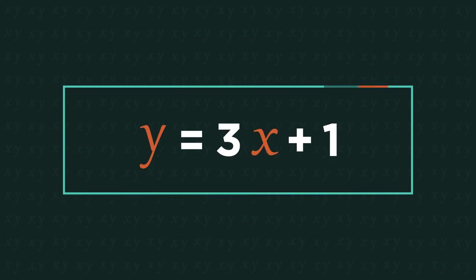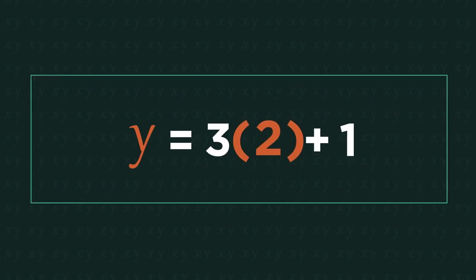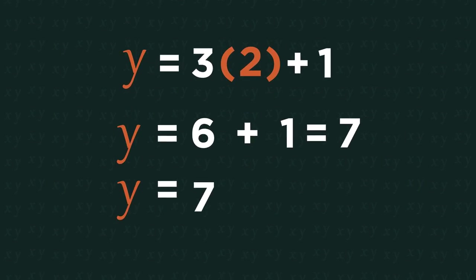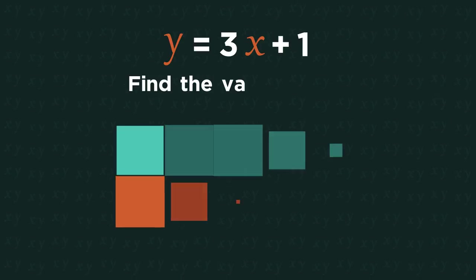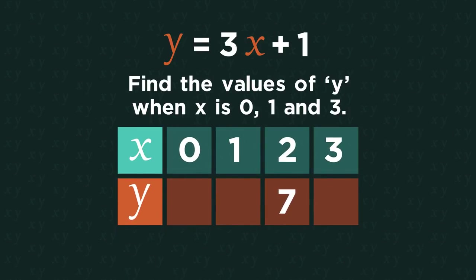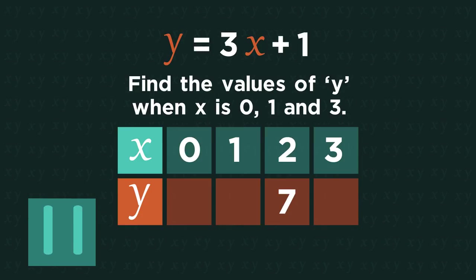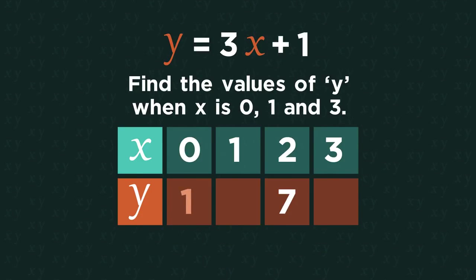We have this relationship. The value of y depends on what the value of x is. So if x is 2 then y is 7. What if x was 0, 1, or 3? Pause the video and find the corresponding y values. Did you get them right?